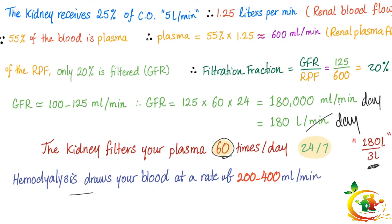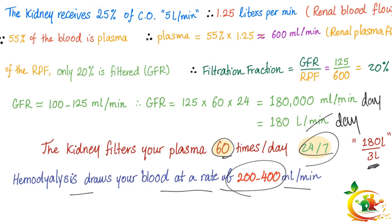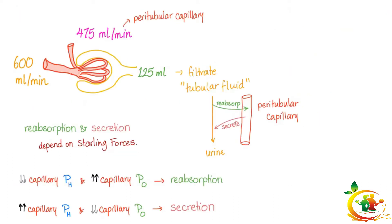Hemodialysis at best draws your blood at a rate of 200 to 400 ml per minute, and it's not 24/7 — you go to hemodialysis maybe three times a week. Your kidney is absolutely amazing.